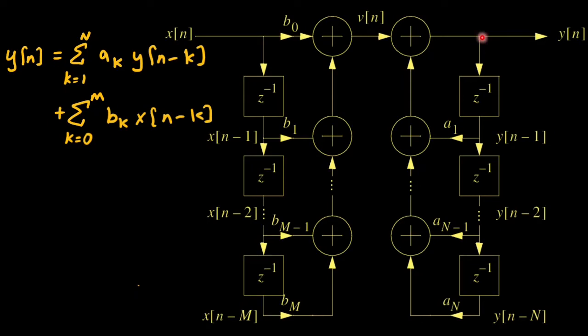On the right side, y of n gets delayed and added in a feedback manner. This type of representation is called block diagram representation in direct form 1.